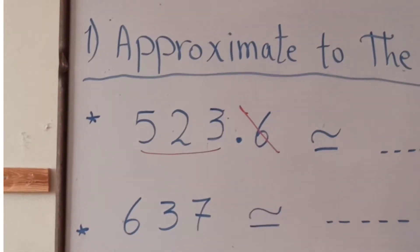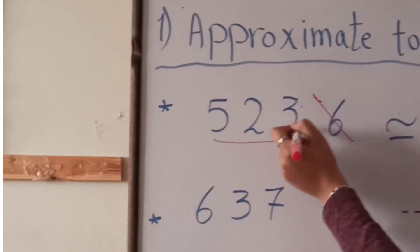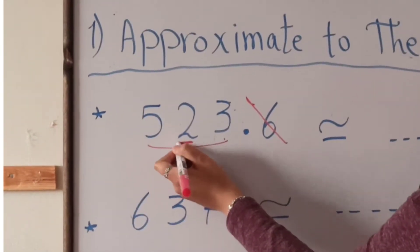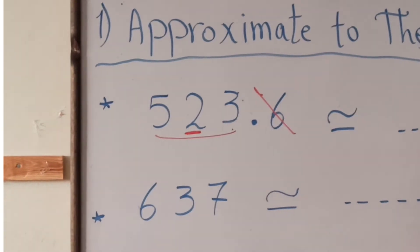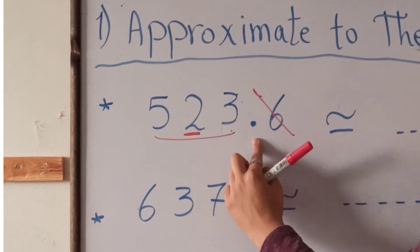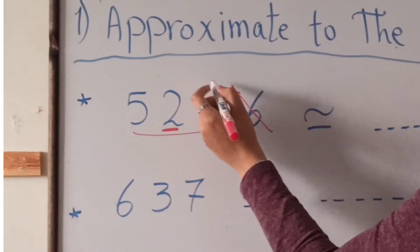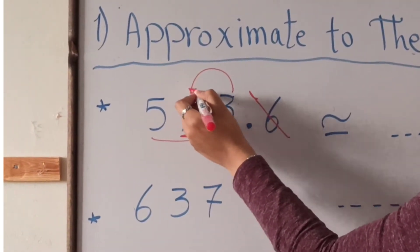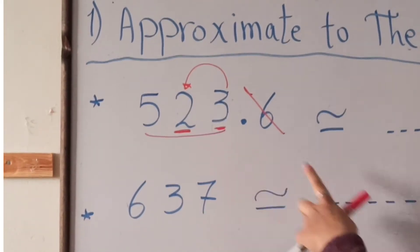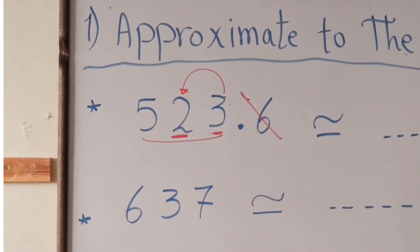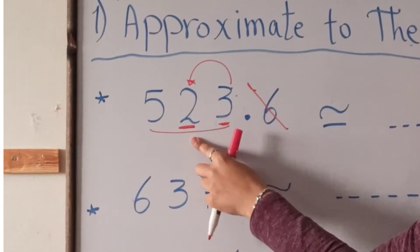We look at the tens digit. This is units, this is tens — we should stop here. Ask the digit to the right of the tens, which is 3. Is 3 poor or rich? — which we covered yesterday. The number 3 is from the poor numbers.